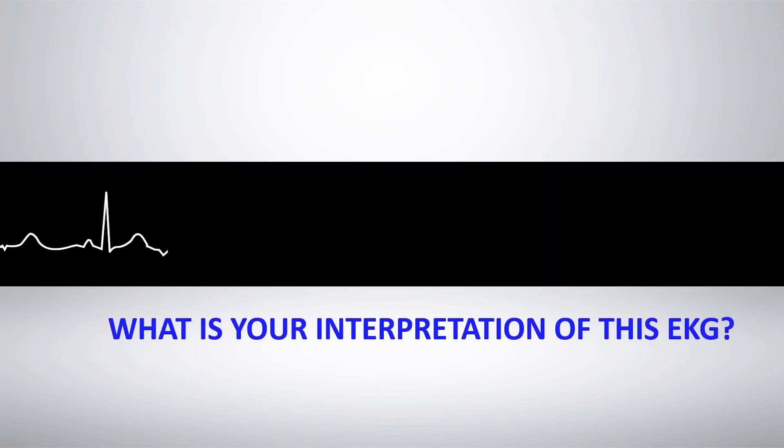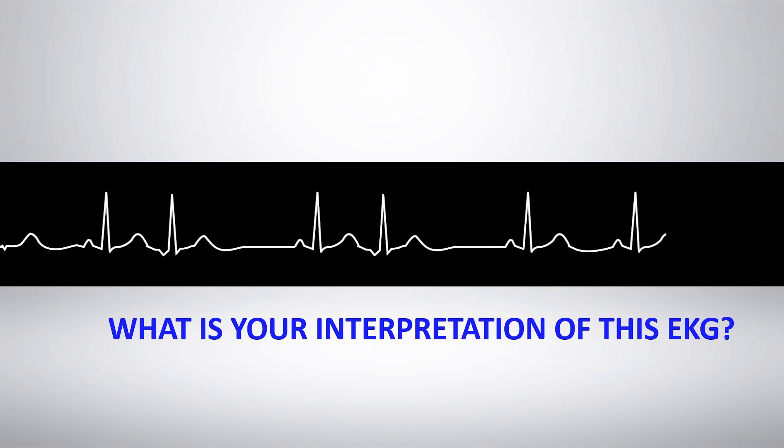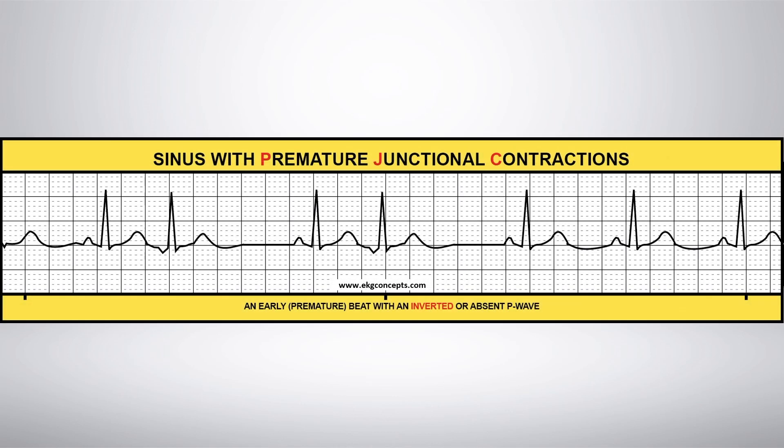What is your interpretation of this EKG rhythm strip? Sinus with premature junctional contractions.